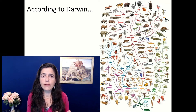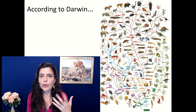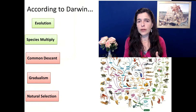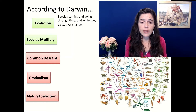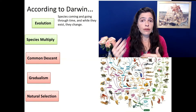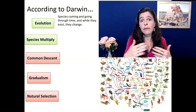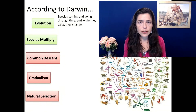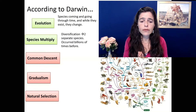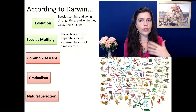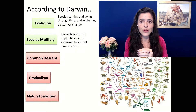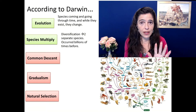Darwin had five main ideas or principles to his theory of evolution. First of all, evolution itself — meaning that species come and go through time and they change within their existence, within generations. Sometimes it could take many, many generations to change, but they change and they multiply and at some point they diversify into two species. That has occurred over and over since the Big Bang, starting from practically nothing, a bunch of proteins got together and then everything came to be.